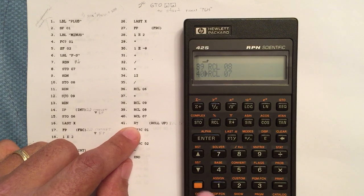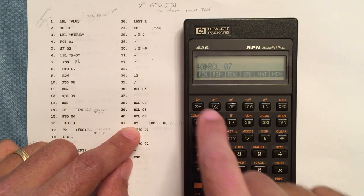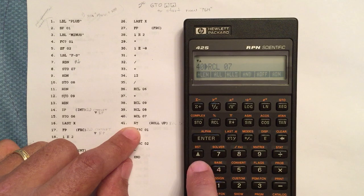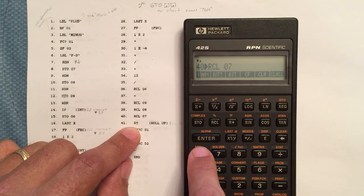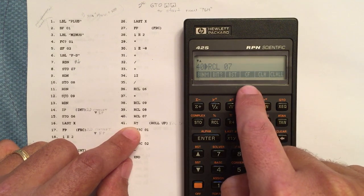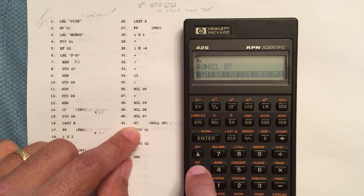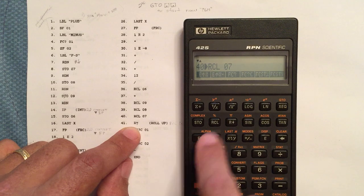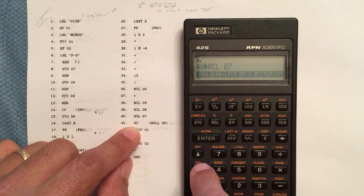If I go to the catalog, so shift catalog, and then all the functions, this gives me pretty much everything. For example, earlier here we had the clear flag. I could have gone here and done it. Here's all those flag clear, flag set.